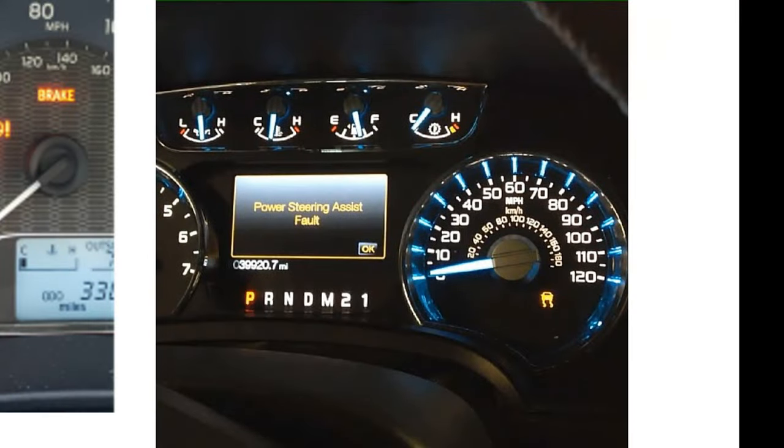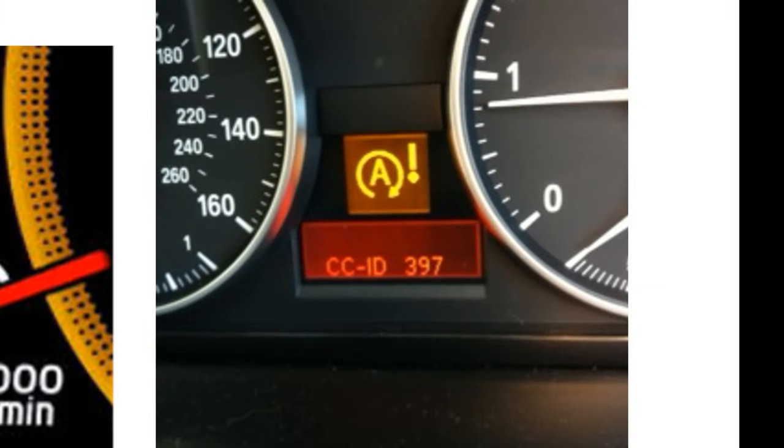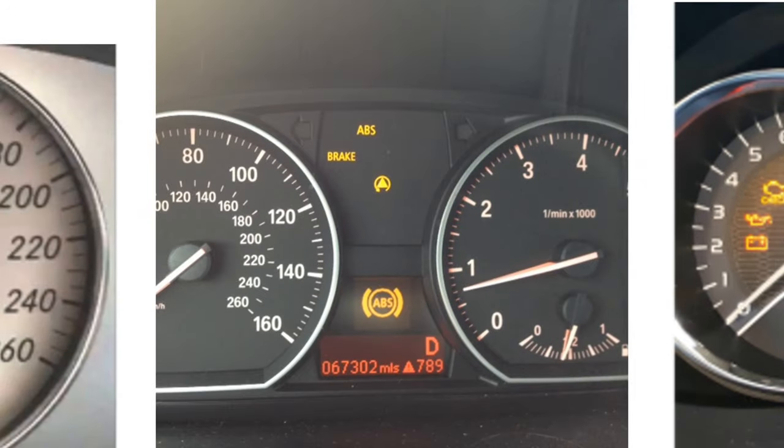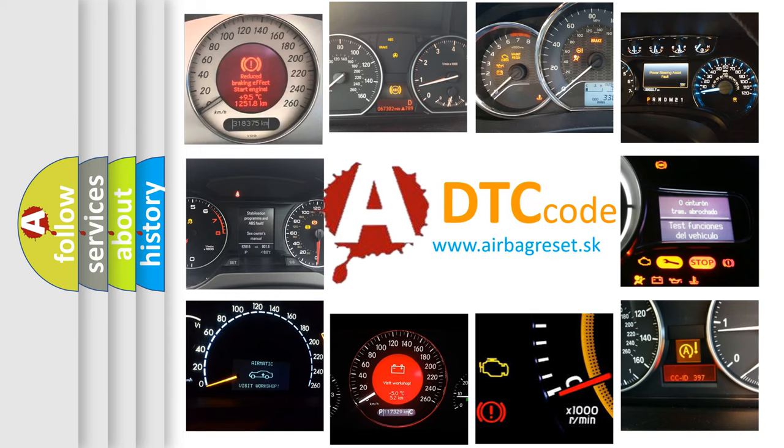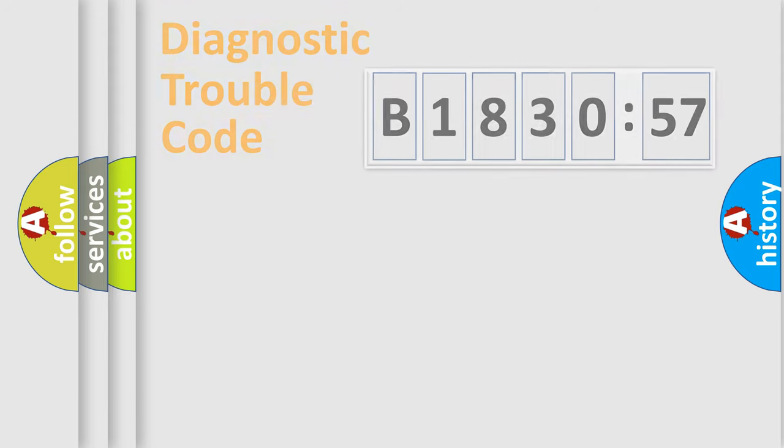Welcome to this video. Are you interested in why your vehicle diagnosis displays B183057? How is the error code interpreted by the vehicle? What does B183057 mean or how to correct this fault? Today we will find answers to these questions together.